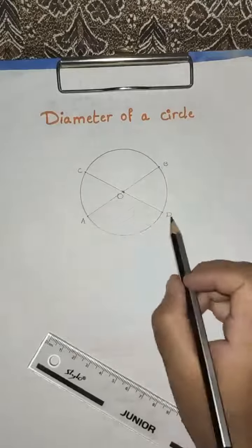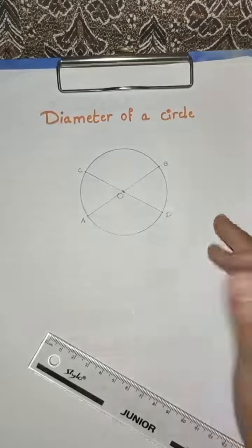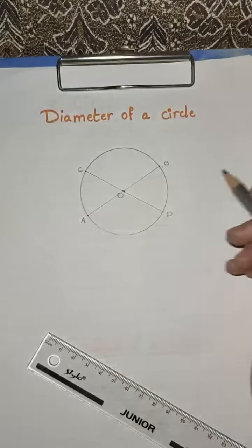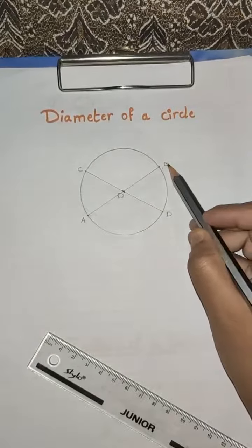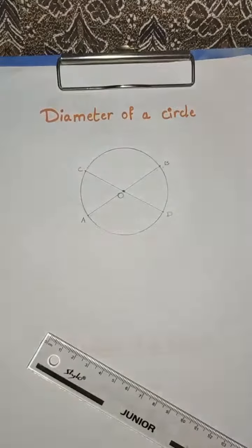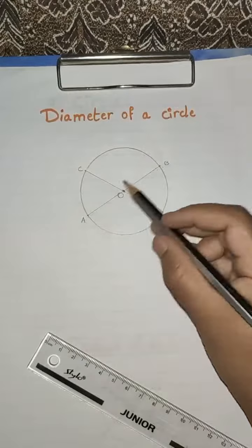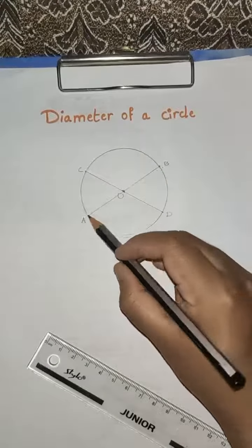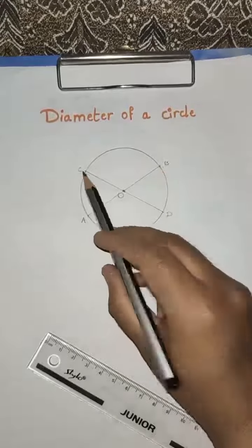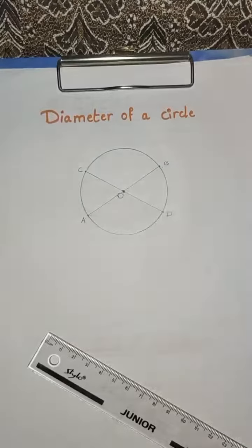So AB and CD are the diameters of a circle. What is diameter? A line segment joining two points on a circle and passing through the center. So a line segment joining two points on a circle and passing through the center is called the diameter of a circle.